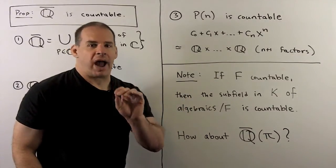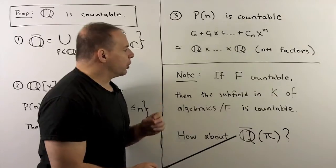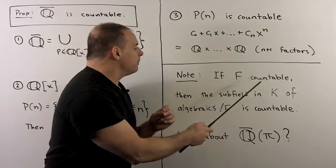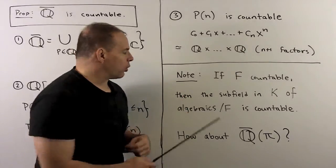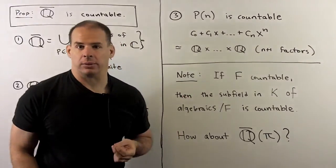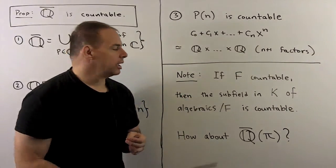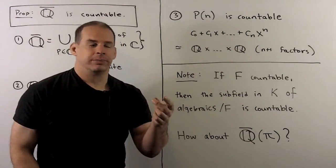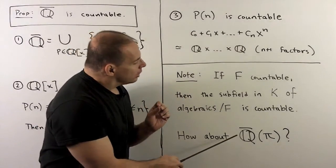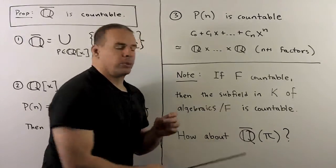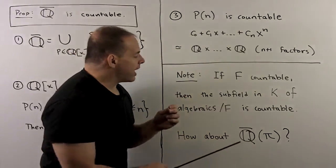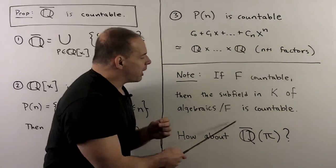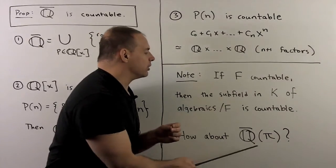Now note there's nothing special about the rationals here. What we've just shown is, if f is countable, then the subfield in k of algebraic elements over f is also countable. Now getting back to the irrationals. If we take the algebraic numbers, we're not going to get control of the irrationals using fields. So the next thing to consider is to take the algebraic numbers and adjoin a transcendental, say pi.